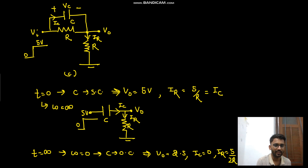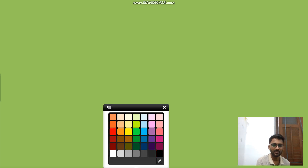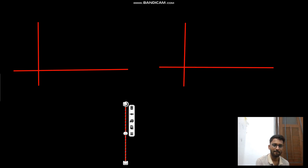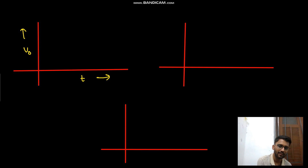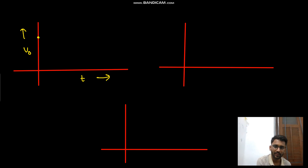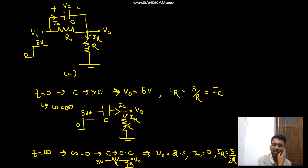Now we can draw the waveforms. In steady state, the capacitor is replaced by an open circuit, leaving an R and R circuit with 5 volts input, and v_node is the output. For v_node: it starts at 5 volts and decays to 2.5 volts.